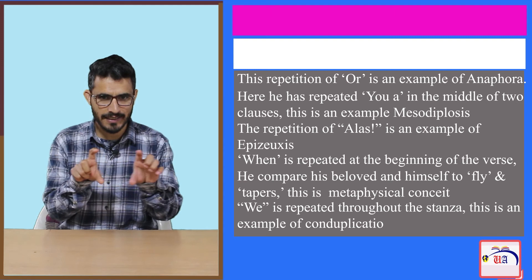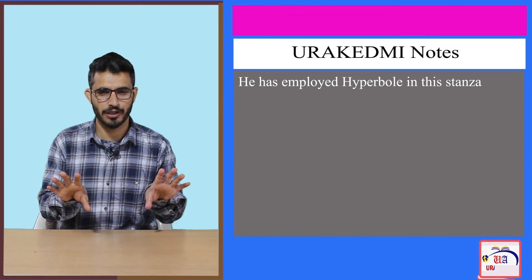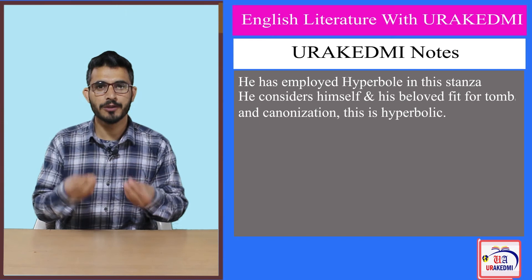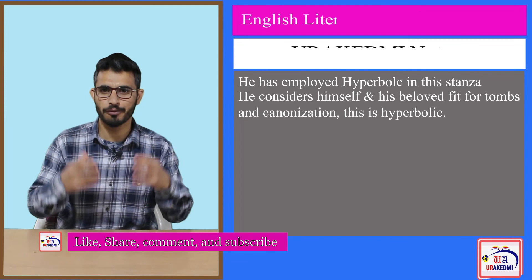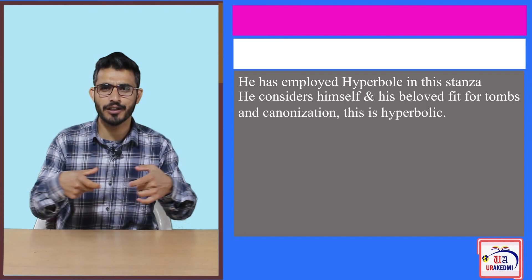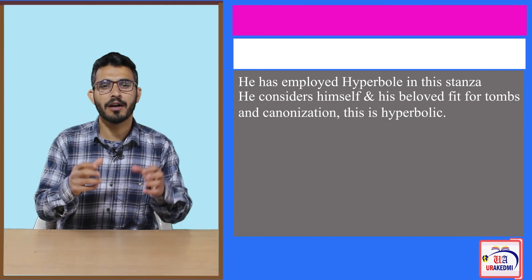One technique employed in the fourth stanza is hyperbole, which means exaggeration. When he says there would come a time when we would be fit for tombs, when people would canonize us and raise our status to the level of pious men — that is an exaggerated statement. That is hyperbole, a rhetorical device used when there is an exaggerated statement.